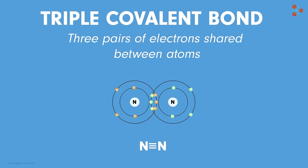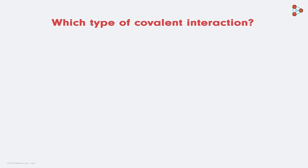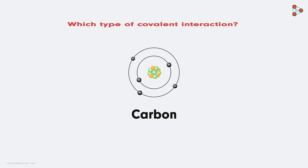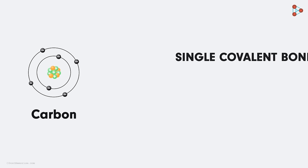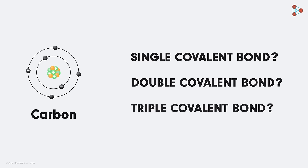This helps both the atoms attain the stable state. Now tell me one thing, which type of covalent interaction does carbon prefer? Does it opt for a single or a double or a triple covalent bond?